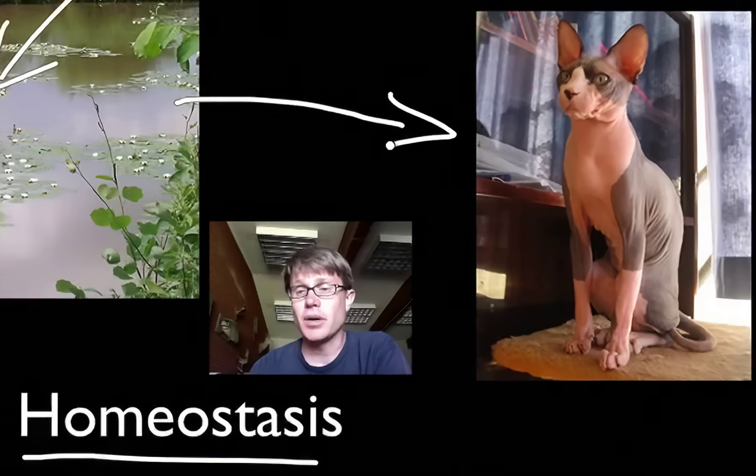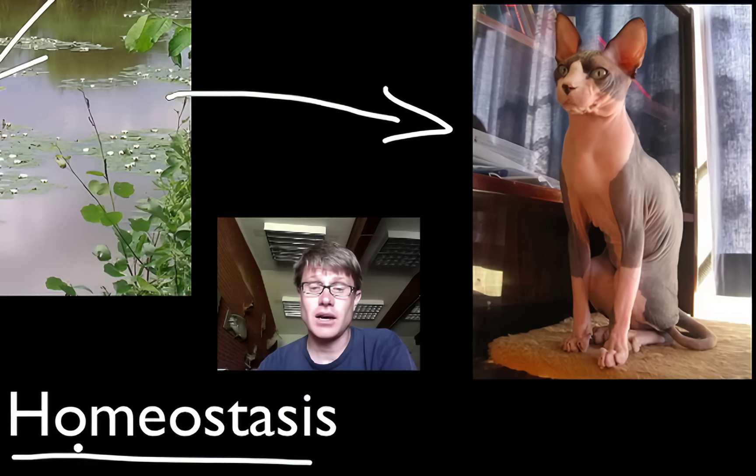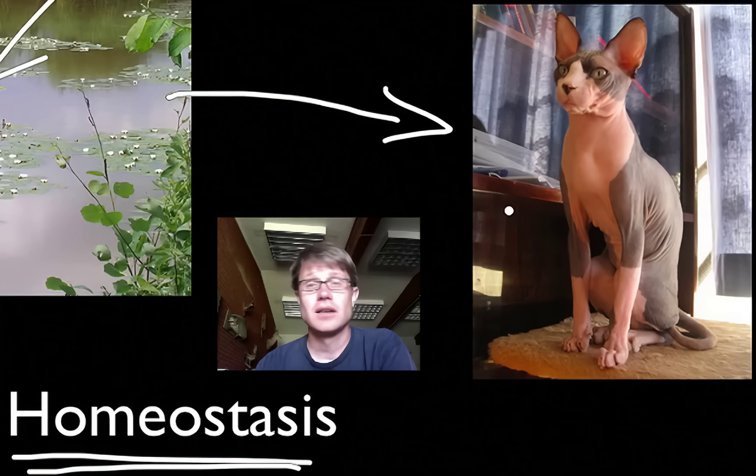As we move out of the pond, or as we become more sophisticated, we kind of bring that pond with us. That internal pond now is what homeostasis is. So this is a hairless cat. A hairless cat is going to maintain its body temperature, and it does that through feedback loops. It's going to maintain its blood glucose level through feedback loops. It's going to maintain the osmolarity of its blood through feedback loops.